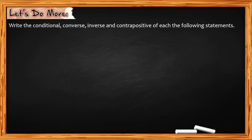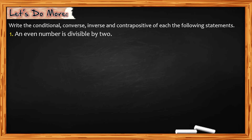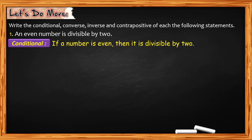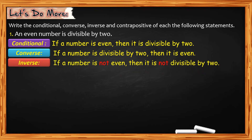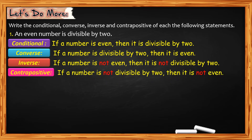Now let's do more. Write the conditional, converse, inverse, and contrapositive of each of the following statements. For number 1: an even number is divisible by two. For the conditional: if a number is even, then it is divisible by two. For the converse: if a number is divisible by two, then it is even. For the inverse: if a number is not even, then it is not divisible by two. For the contrapositive: if a number is not divisible by two, then it is not even.